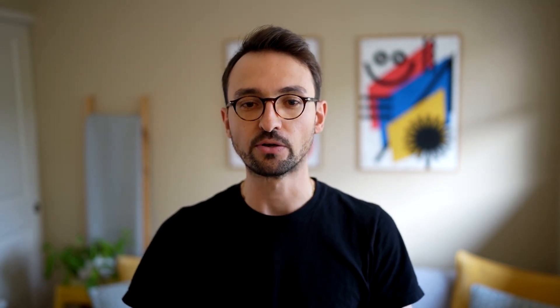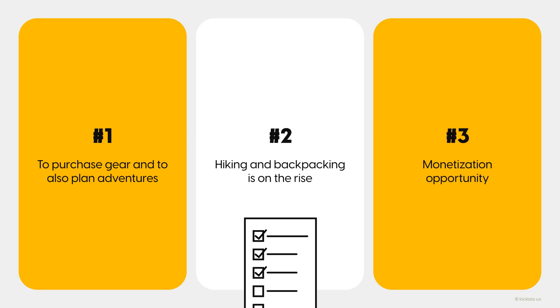Now that you have a general understanding of the users, let's go over a few reasons why you should build this solution. First, so that REI becomes the hub for everything hiking and backpacking, so that people can not only purchase gear, but also know where to go on the next adventure. Second, hiking and backpacking is on the rise — from 2006 to 2019, the number of hikers increased by 66% in the US. And third, it's a great monetization opportunity, as it allows REI to make product recommendations based on the type of hike a user selects.